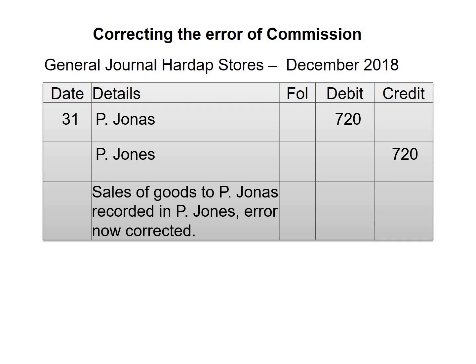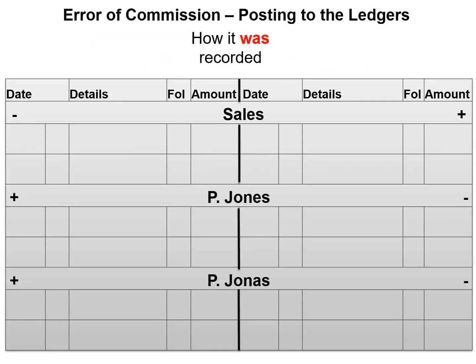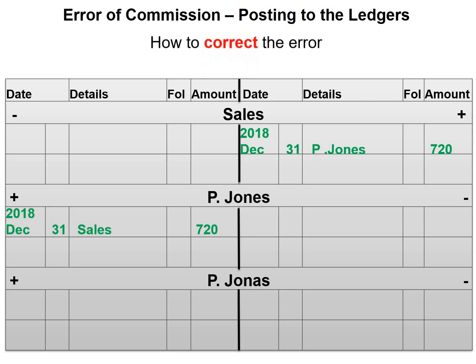Let's have a look at how we will enter this in our ledger. How this was recorded was as follows: sales was credited, which is fine, and then the account of P. Jones was debited. But the transaction was not for P. Jones — it was for P. Jonas. To correct this error, we would first need to credit the account of P. Jones, which we did in our general journal, and then we need to debit the account of P. Jonas, which we also did in our general journal.